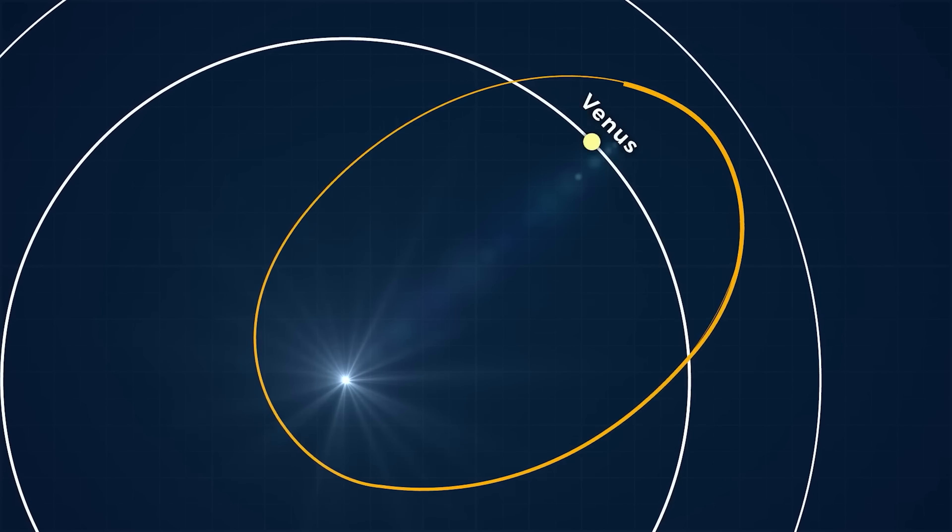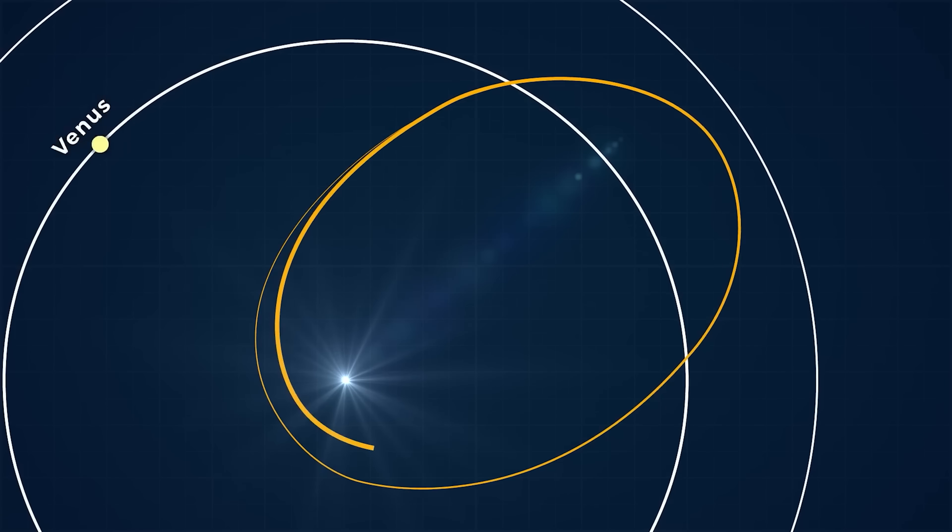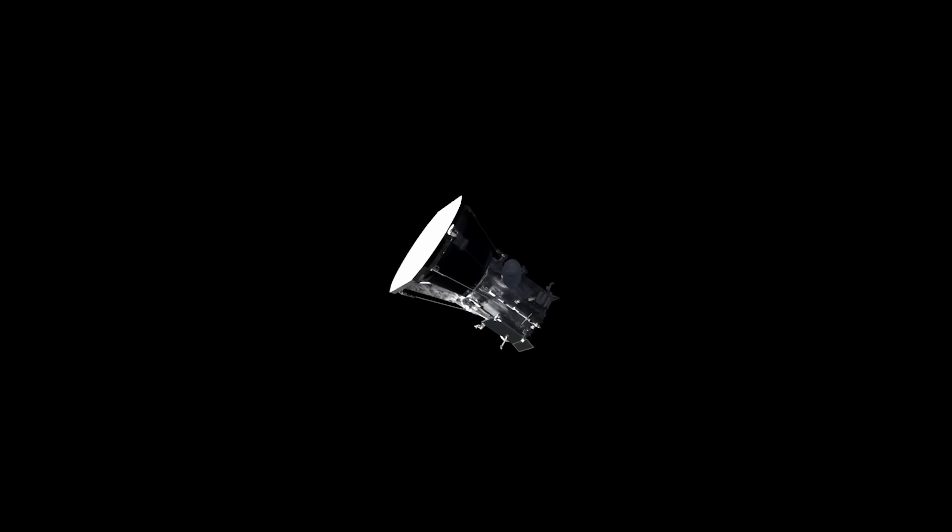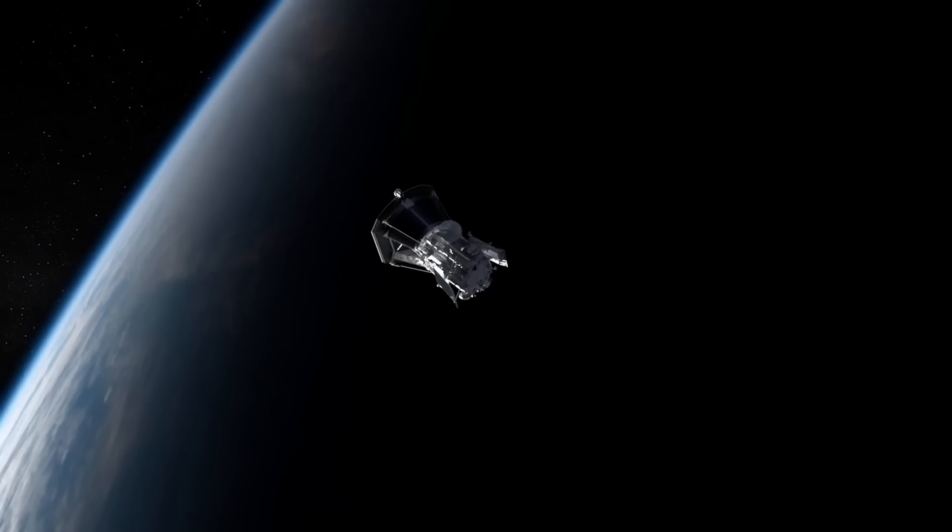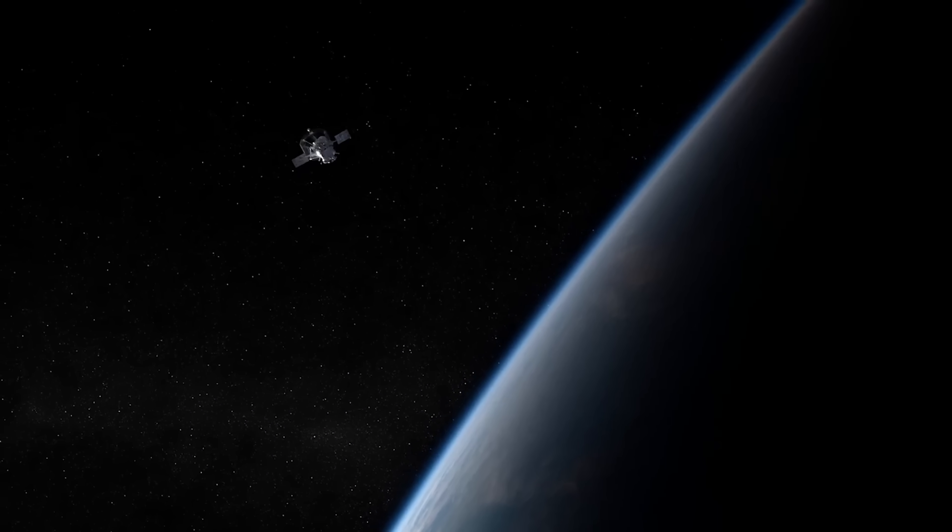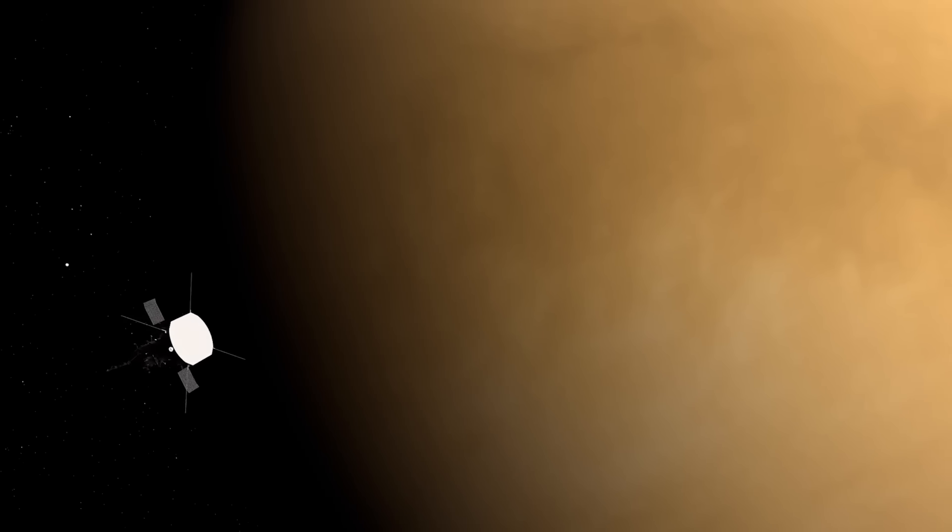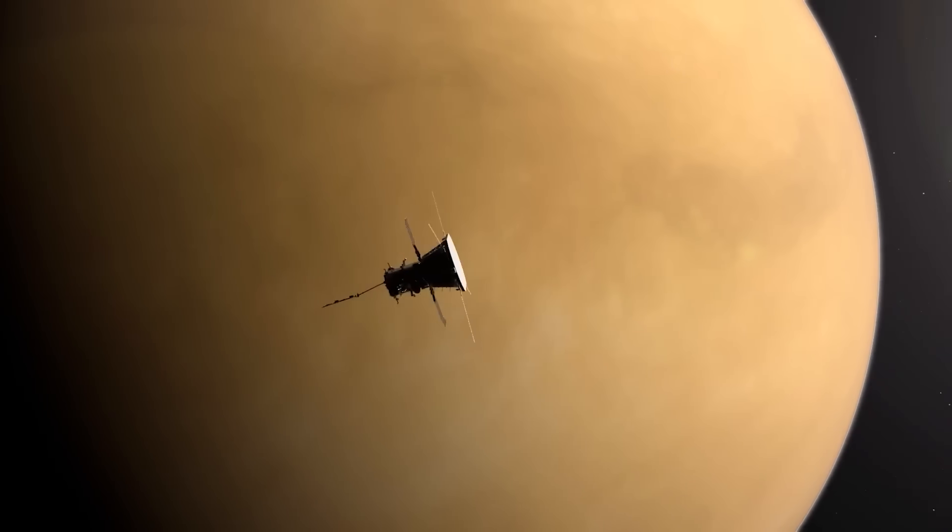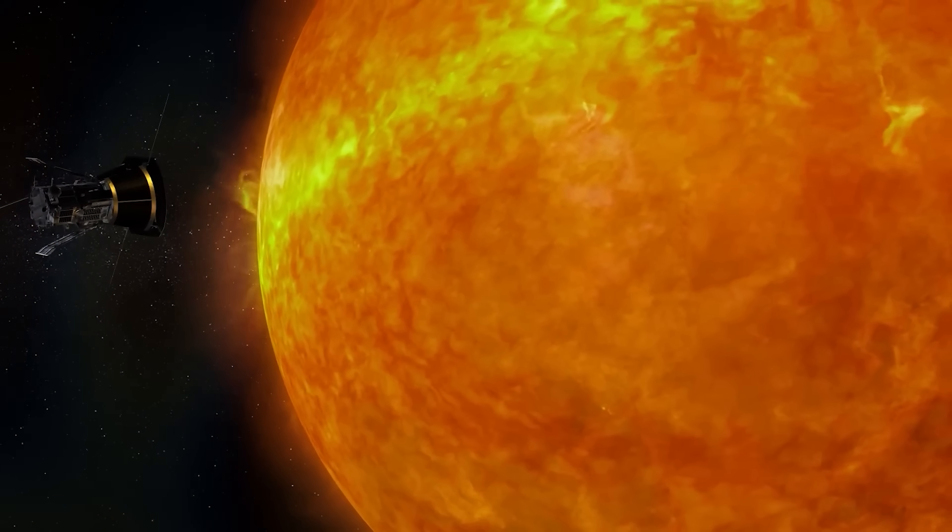And every time it passes Venus, it gets closer and faster. We're talking traveling at nearly 400,000 miles per hour, fast enough to circle Earth 15 times in one hour. That makes it the fastest human-made object in history. Let that sink in.